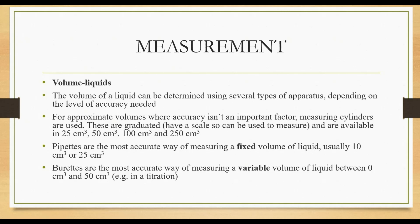Now, how do we measure the volume of liquids? The volume of a liquid can be determined using several types of apparatus, depending on the level of accuracy needed. For approximate volumes, where accuracy isn't an important factor, measuring cylinders are used. These are graduated — they have a scale — and are available in the following volumes: 25 cm³, 50 cm³, 100 cm³, and 250 cm³.